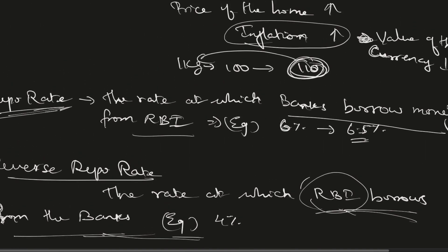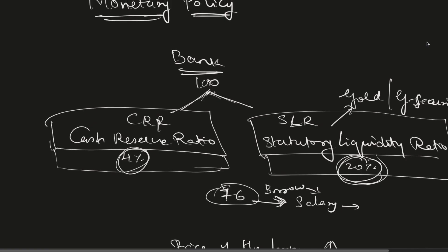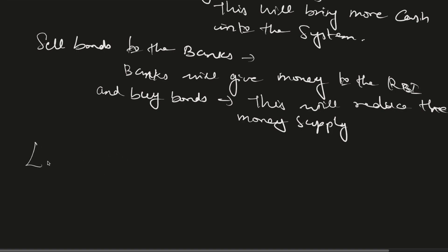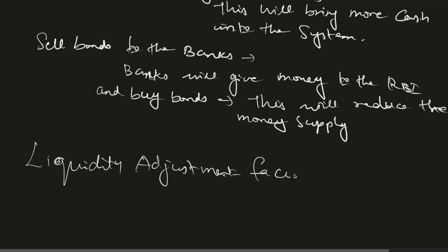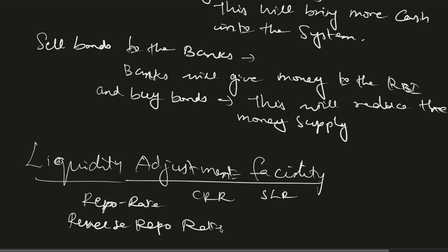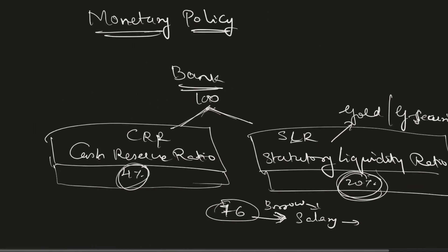These are the terms associated with money supply overall. All of these — CRR, SLR, repo rate, and reverse repo rate — fall under what is called the Liquidity Adjustment Facility (LAF). These are the key terms associated with monetary policy.